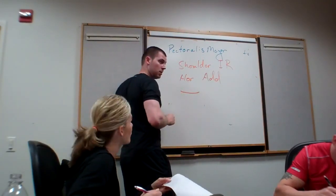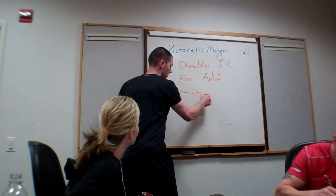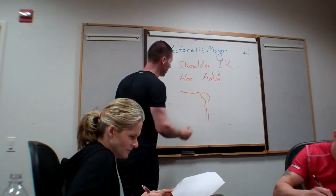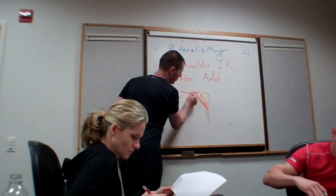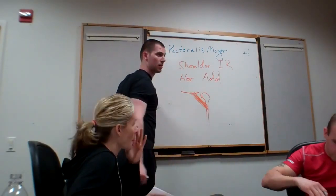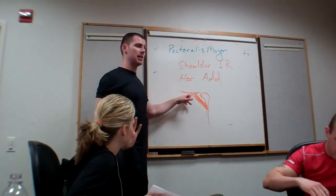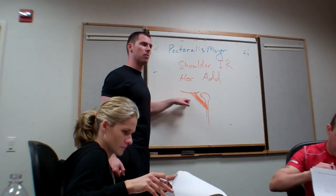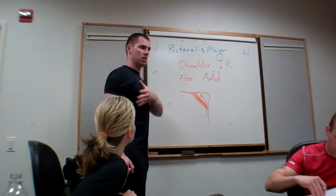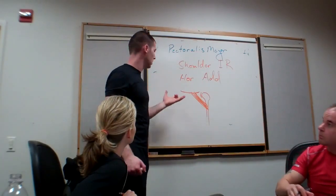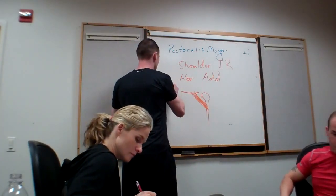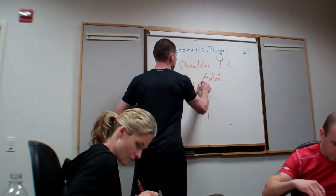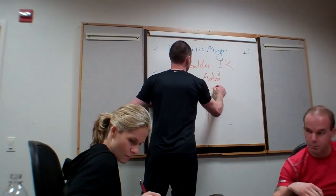Now my clavicular head — some of the fibers in my clavicular head are very up-and-down oriented. So with my arm down by my side, what do you think my clavicular head could help with? It doesn't have a perfect angle for it, but it could help with a little bit of shoulder flexion. So we can say the clavicular head helps with shoulder flexion.